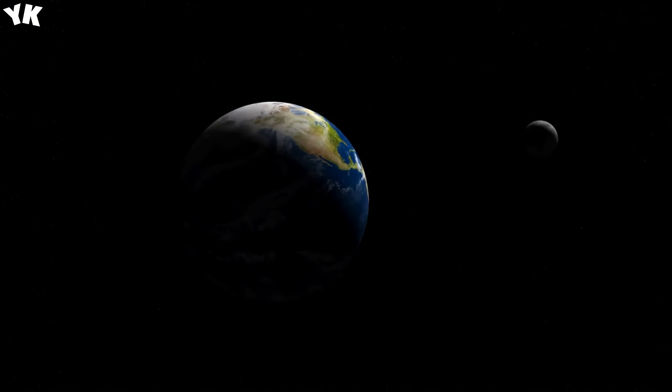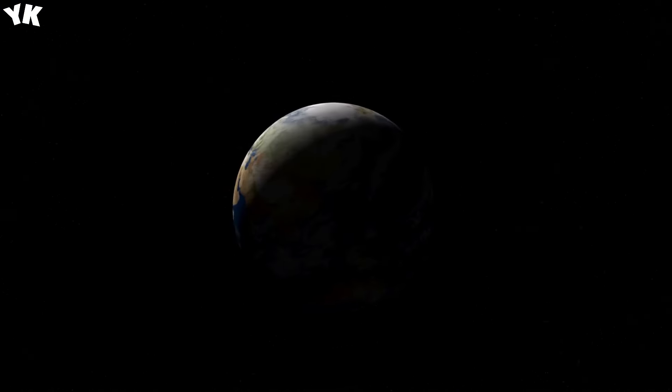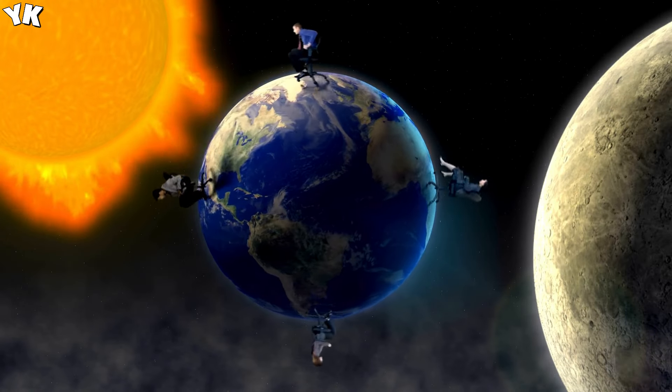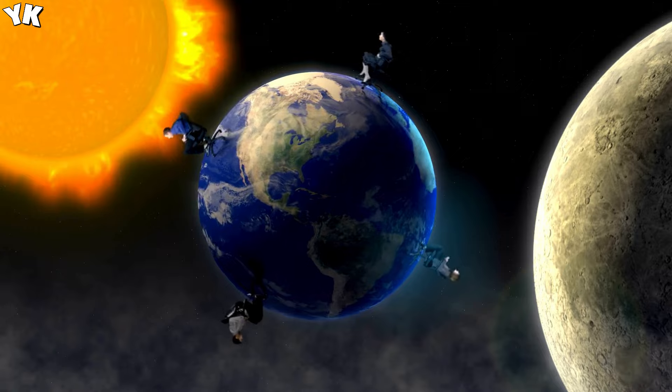Voyager starts sending data back to Earth using a 20-watt signal. As it travels through space, the signal strength weakens. And by the time it reaches Earth, the signal is barely detectable.